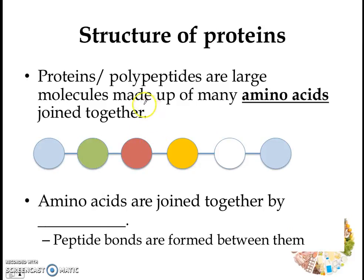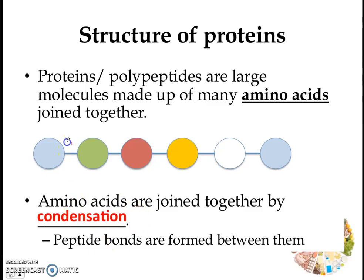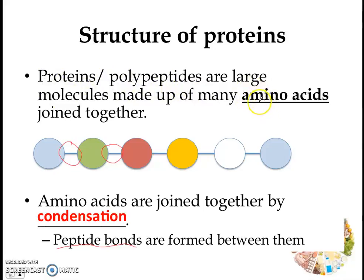So what is the structure of proteins? Proteins and polypeptides are large molecules made up of many amino acids joined together. They're joined together by condensation, and the bonds between amino acids are what we call peptide bonds. Now, what is the difference between protein and polypeptide? Both are large molecules made up of many amino acids, but proteins are the longest and largest kind of amino acid chains. Polypeptides are a bit smaller but still quite long. Then of course you have single unit amino acids.